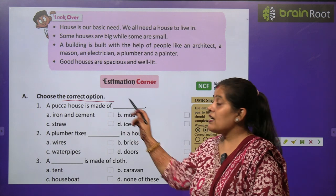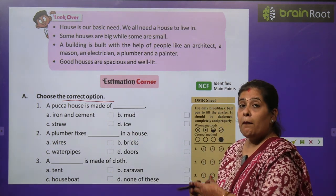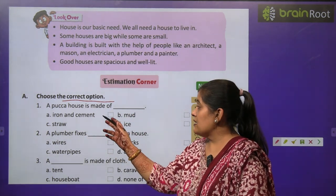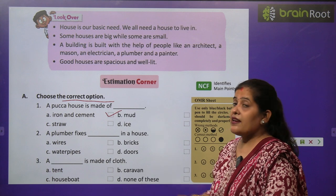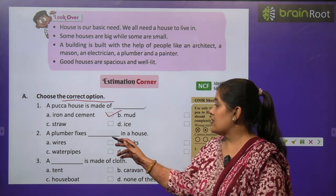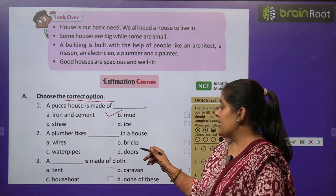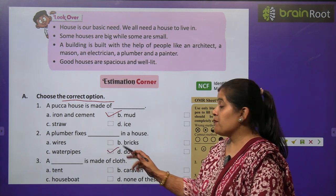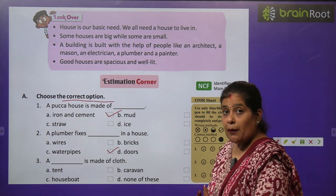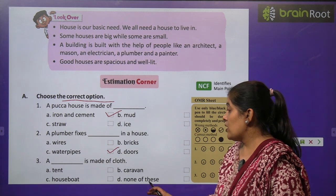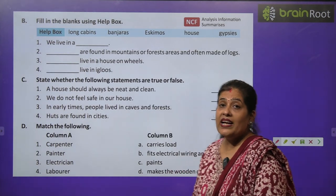Now time to do some exercises. Exercise A: choose the correct option. Question 1 — a पक्का house is made of: iron and cement, mud, or iron trough? The correct answer is option A: iron and cement. Question 2 — a plumber fixes what in a house: wire, water pipes, rigs, or door? A plumber fixes water pipes. Question 3 — a dash is made of cloth: tent, houseboat, caravan, or none of these? The correct answer is tent — t-e-n-t.